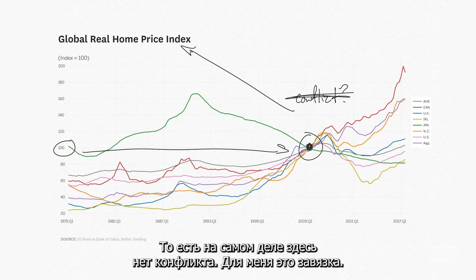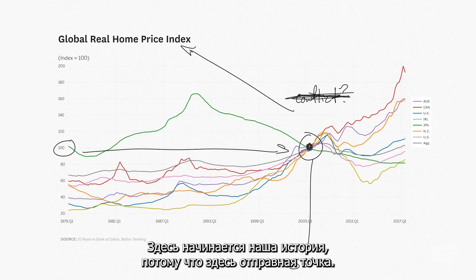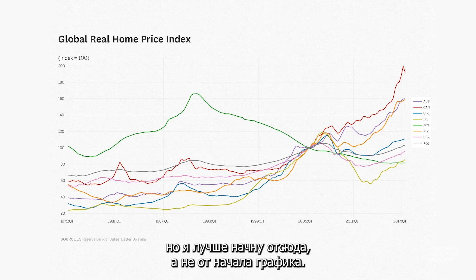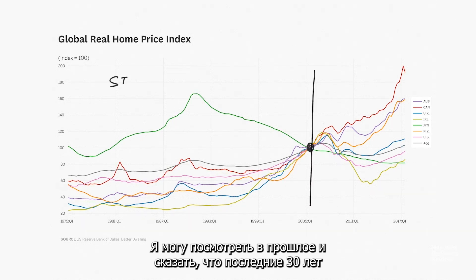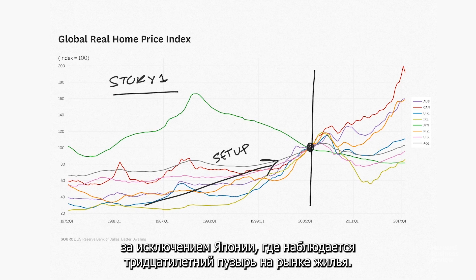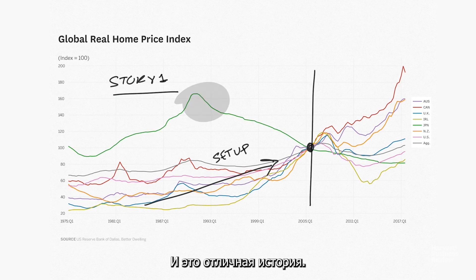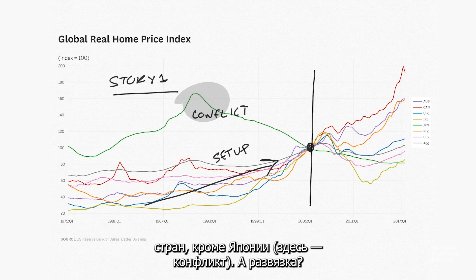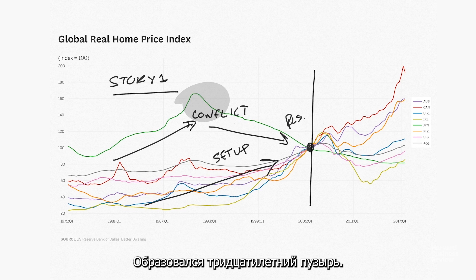So there's really no conflict there — in fact, I think that's my setup. That's where we start, because that's where they started. I can look backward and say home prices rose steadily in most places in the world for 30 years, except for Japan, which experienced a three-decade-long bubble. The setup is home prices rose steadily in most places; except in Japan — which is the conflict and resolution — it experienced this 30-year bubble.